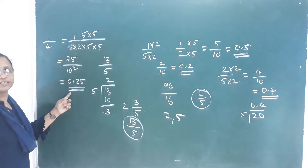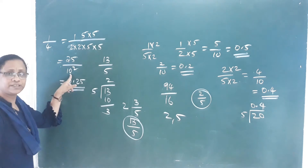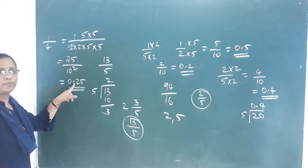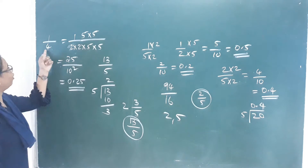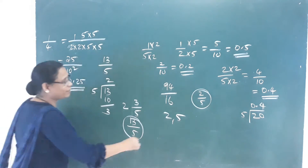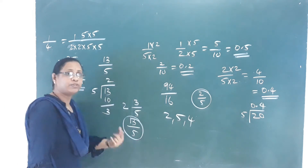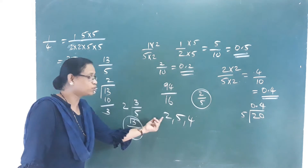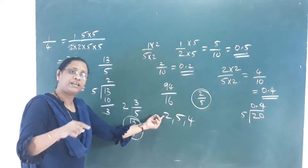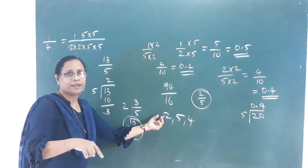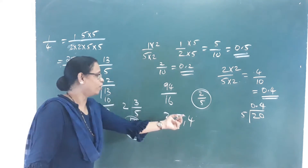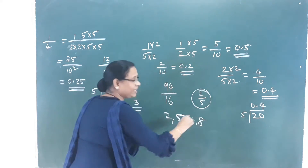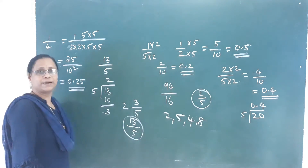For denominator 4, that is 100 — 10 into 10. So 2 decimal places. We can do that: 4 equals 2 into 2, giving 1 by 8 as the next example — equal to 1 by 2 into 2 into 2.